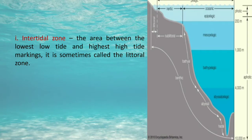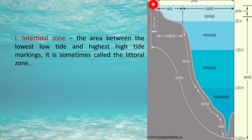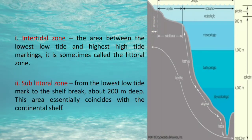The first zone is the intertidal zone, also called the littoral zone. It is the area between the lowest low tide and the highest high tide mark. As we can see in the diagram, this region between the highest high tide and the lowest low tide point is called the littoral zone.